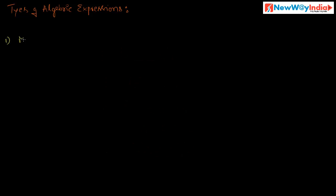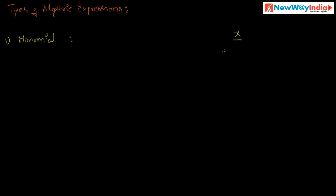First one is monomial. What is a monomial? If an algebraic expression contains only one term, then it is called a monomial. One term — for example, x is a term. Suppose x plus y has two terms, but if you consider only one term, then it is called a monomial.